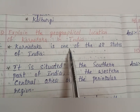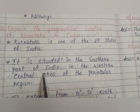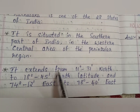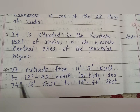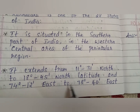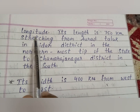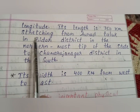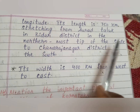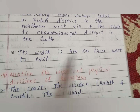Answer: Karnataka is one of the 28 states of India. It is situated in the southern part of India in the western central area of the peninsular region. It extends from 11°31' to 18°45' north latitude and 74°12' east to 78°40' east longitude. Its length is 750 km stretching from Aurad Taluk in Bidar district in the northernmost tip to Chamarajanagar district in the south. Its width is 400 km from west to east.